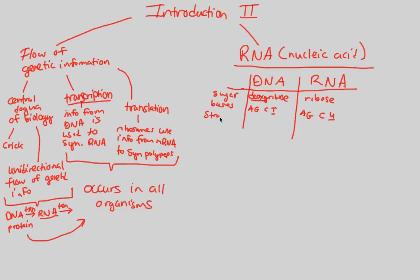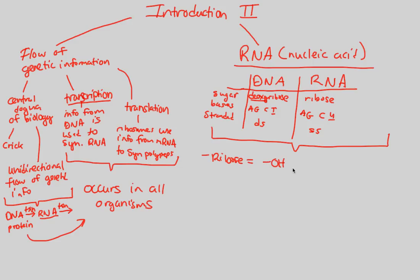There is also a major difference in terms of strandedness: DNA is double-stranded (DS) and RNA is single-stranded (SS). Regarding the sugar detail — ribose has a hydroxyl group, an OH group, at the two-prime carbon, which is not seen in DNA. That's why DNA is called deoxy, meaning there's no hydroxyl group at this two-prime carbon. RNA just has a normal ribose sugar at its nucleotide structure.